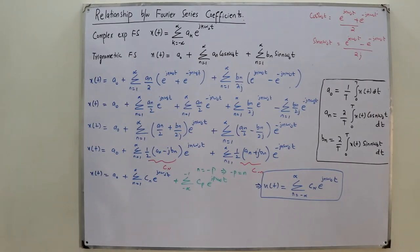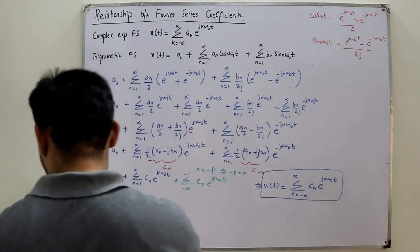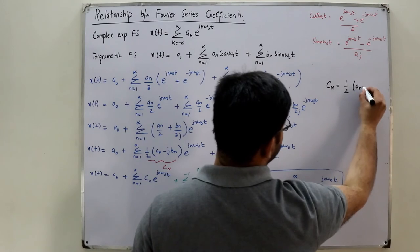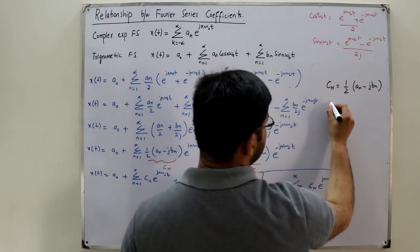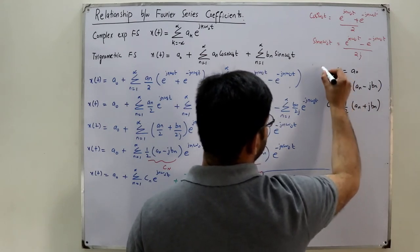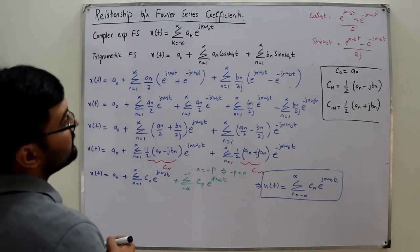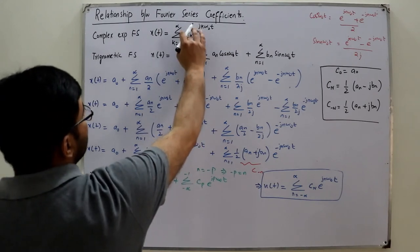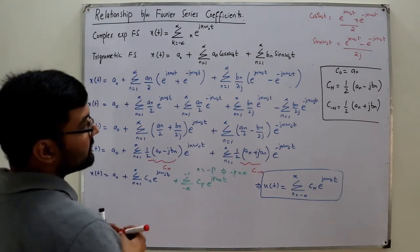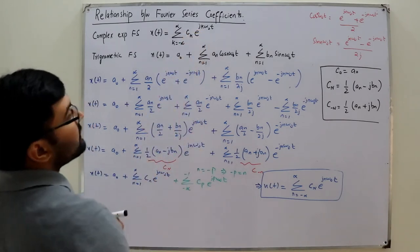Let me write the relations explicitly. c_n = (1/2)(a_n - j*b_n), c_{-n} = (1/2)(a_n + j*b_n), and c_0 = a_0. These c's are the complex exponential Fourier coefficients. I proved that the trigonometric and complex exponential Fourier series are one and the same thing.